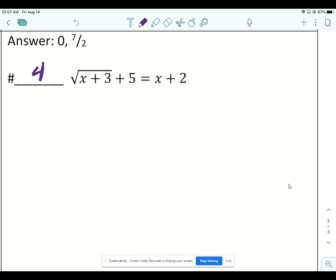So this is a radical equation. The first thing we want to do is isolate the radical by subtracting the five, moving the five to the other side.